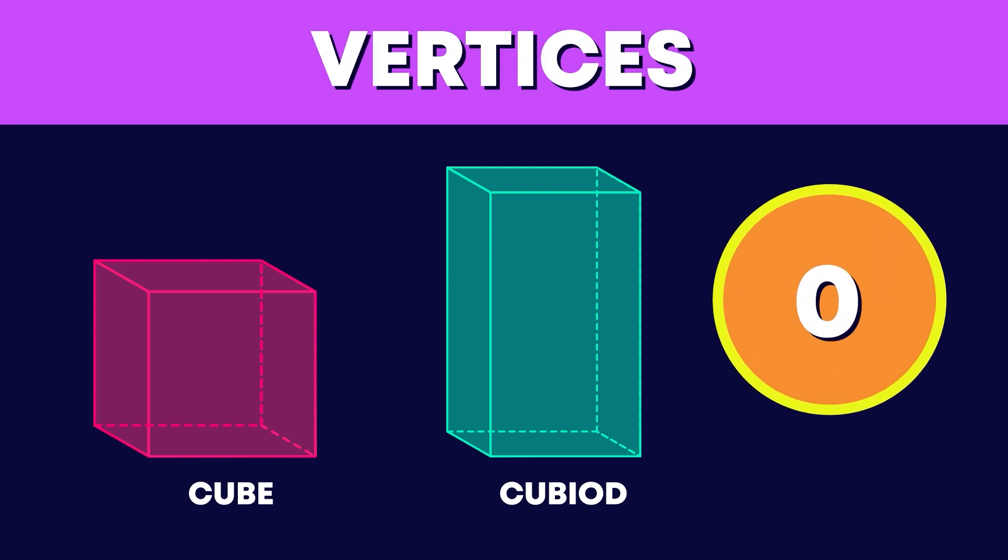Can you see how many vertices cubes and cuboids have? There are 1, 2, 3, 4, 5, 6, 7, 8 vertices. Well done!